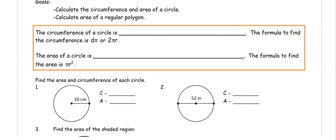This video is about calculating circumference and area of a circle, and calculating the area of a regular polygon — specifically a hexagon. We have talked about circles already in a different unit.